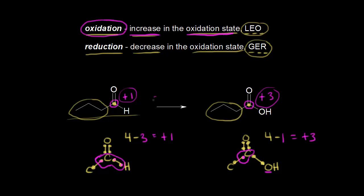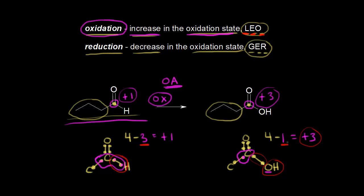So our starting compound was oxidized — carbon went from an oxidation state of plus one to plus three, and an increase in the oxidation state is oxidation. In order for this to be oxidized, we would need some sort of oxidizing agent. It's the oxidizing agent that itself is being reduced, because whenever something is oxidized, something else has to be reduced. We can also think about the other definition: oxidation involves loss of electrons. On the left, carbon had three electrons around it, and when we added a bond to oxygen, carbon lost those two electrons, going from three electrons to only one.